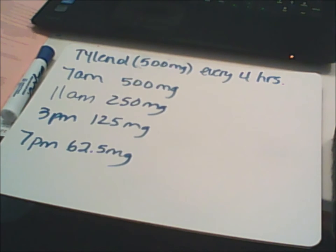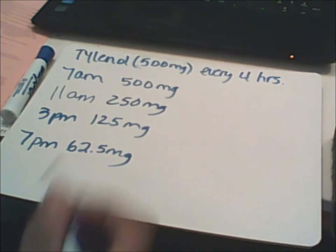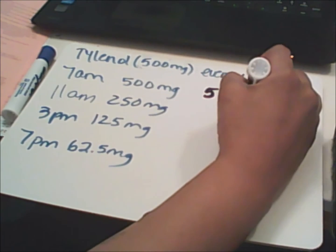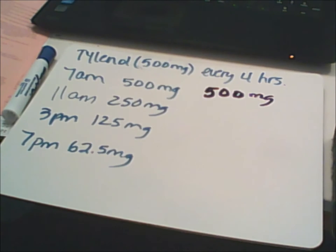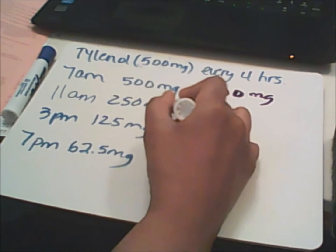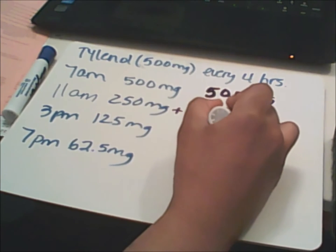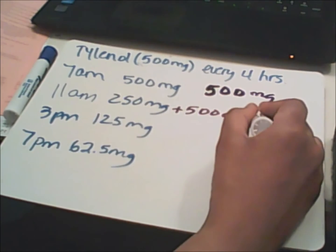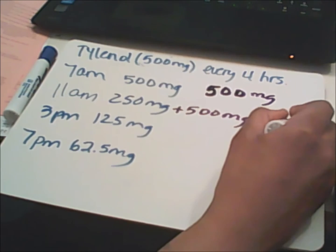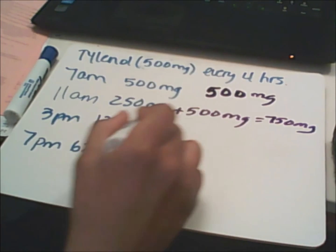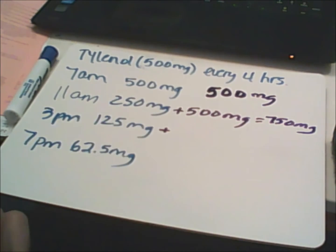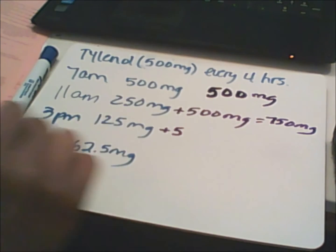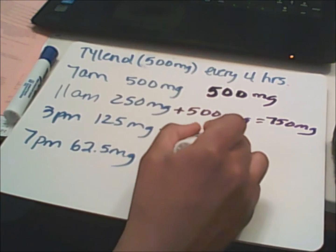On the other hand, if you have a person who's taking their dosage like they're supposed to — same scenario, they start off at 7 a.m. at 500 milligrams — then when they take their next dosage they're going to have half of what was in their body from before plus the new amount, so together that makes 750 milligrams.